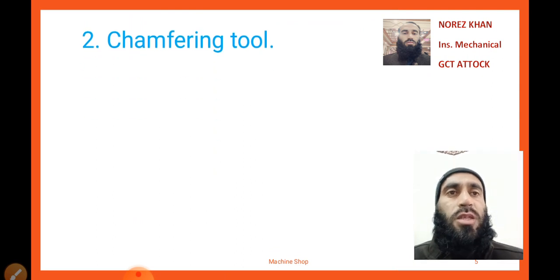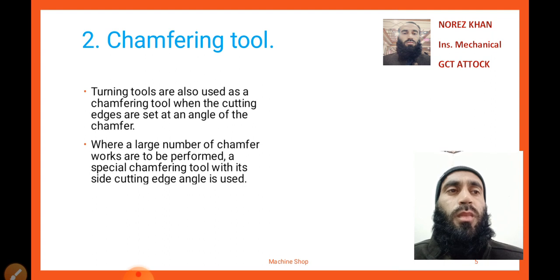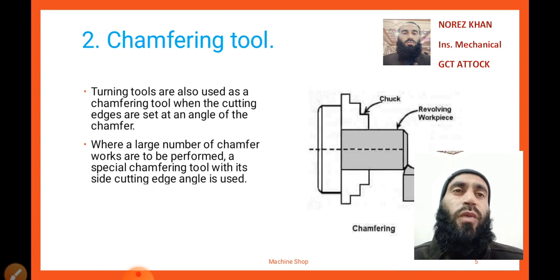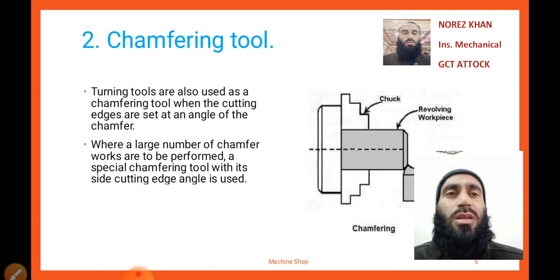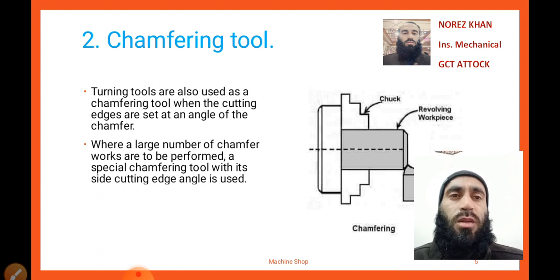The next tool is a chamfering tool. Here you can look at the diagram. Chamfering is basically the operation of removing sharp edges. Turning tools are also used as a chamfering tool when the cutting edges are set at the angle of the chamfer we want to produce. Where a large number of chamfer operations are to be performed, a special chamfering tool with its side cutting angle is used.